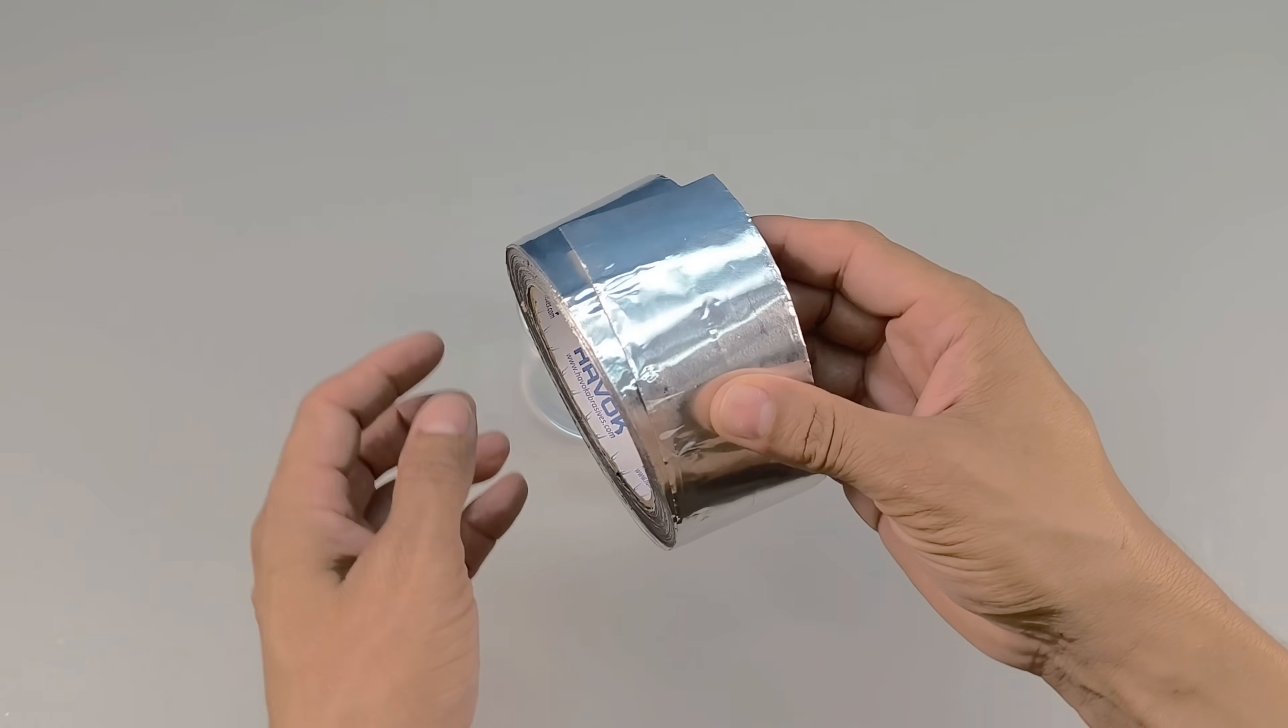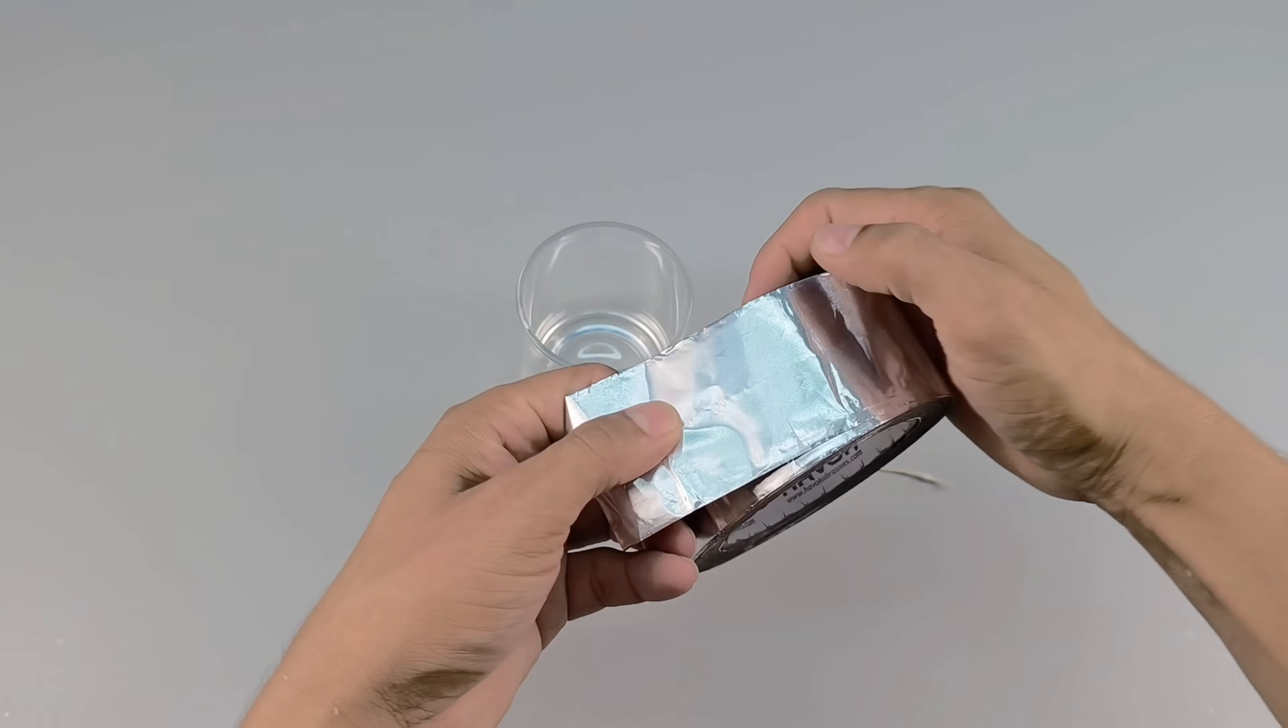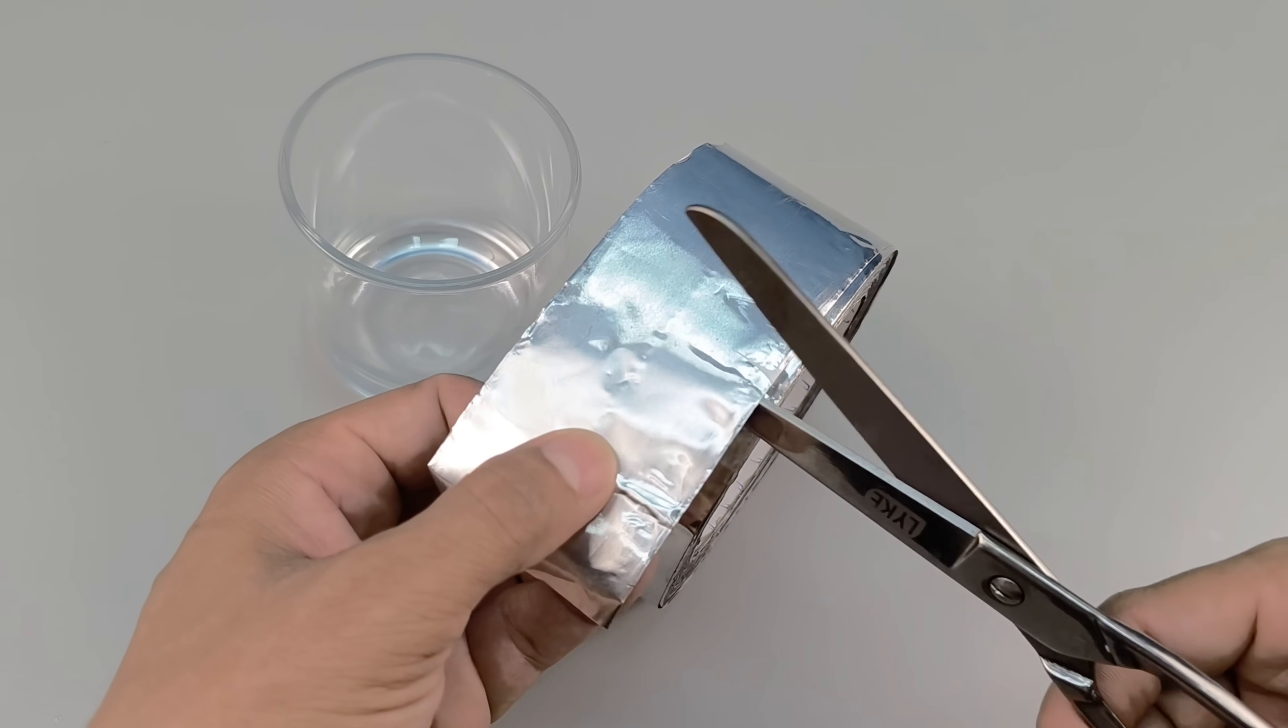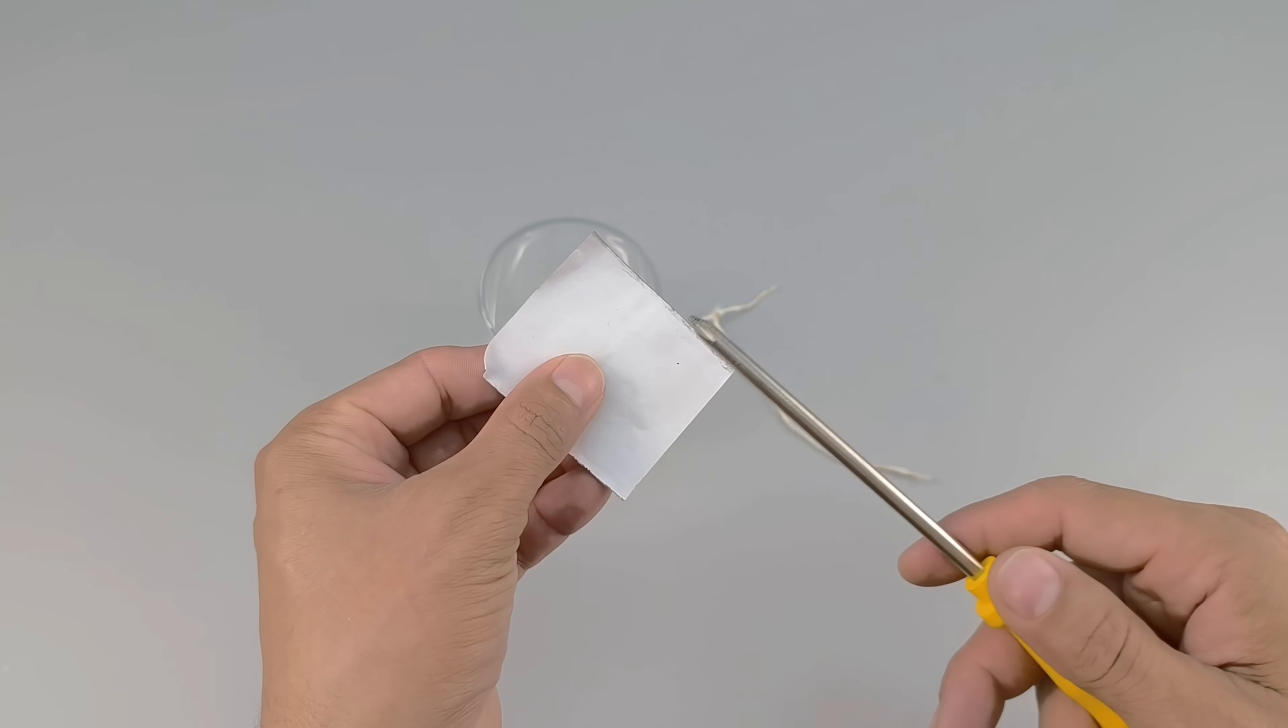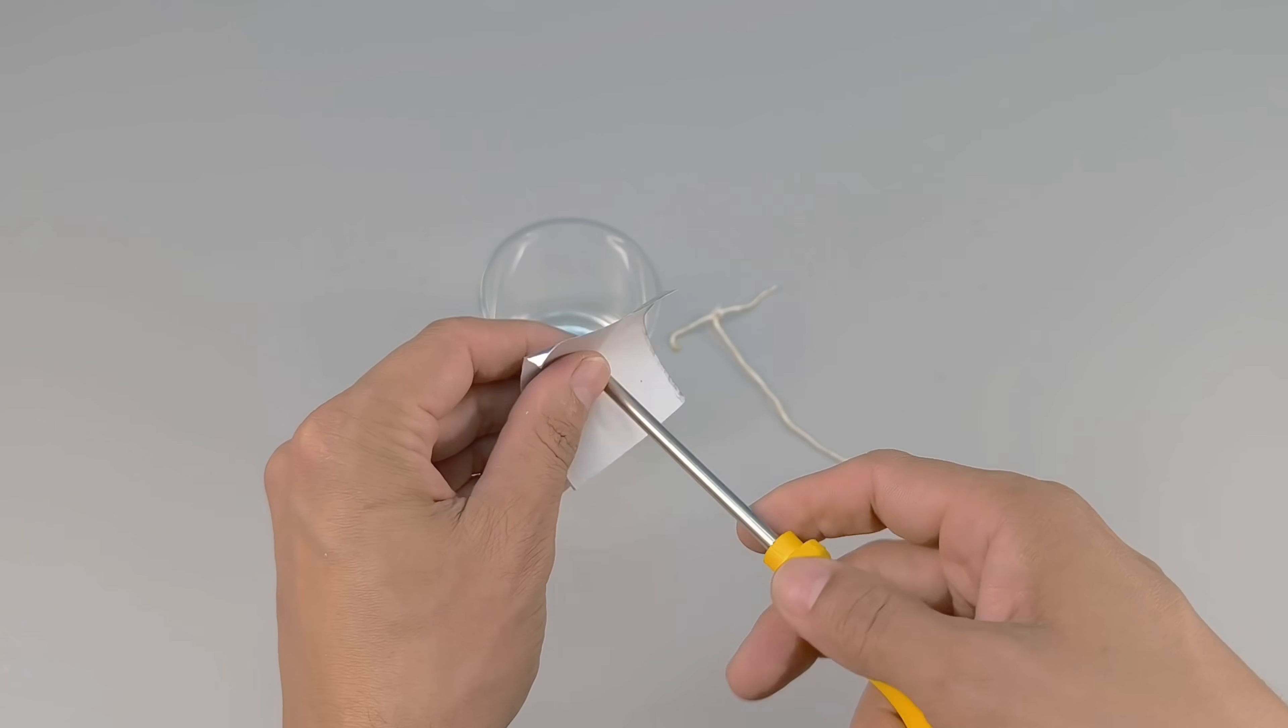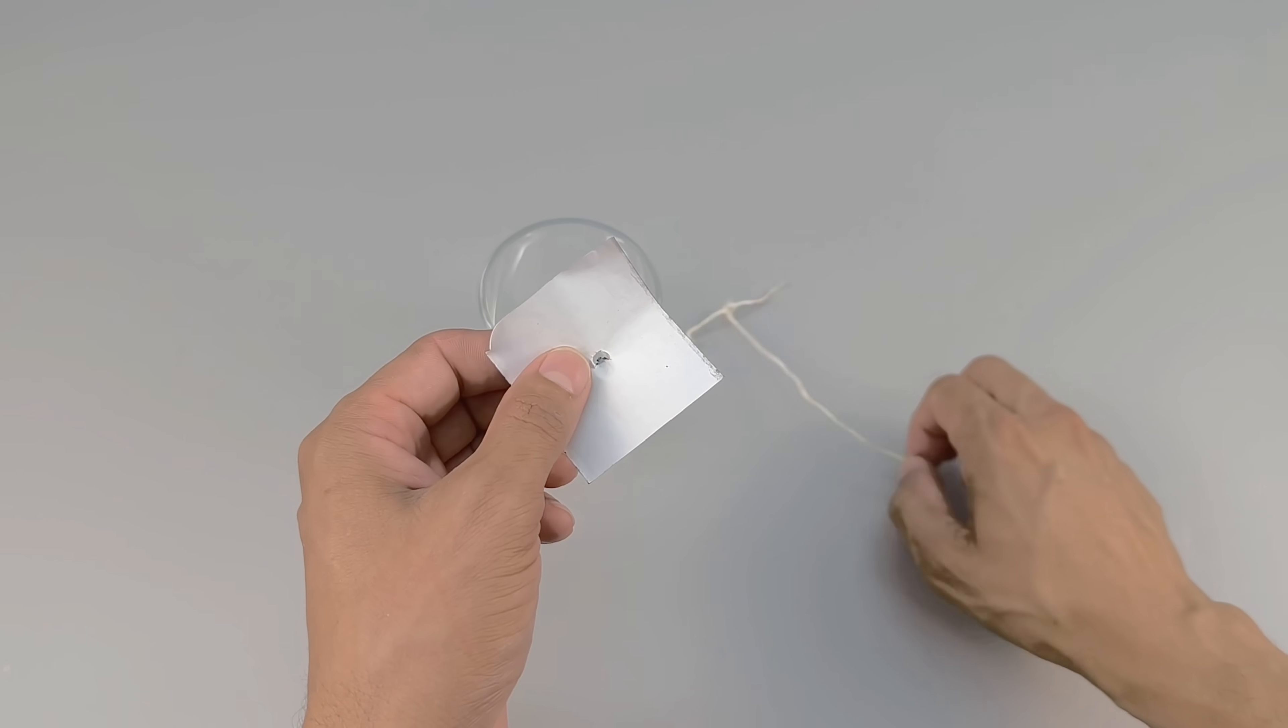In my case, I'm using heat-resistant aluminum tape, which withstands the heat of hot wax well without loosening or warping. It's great for keeping the wick firmly in place at the base of the cup, especially if you want to reuse the container later or ensure a cleaner look.